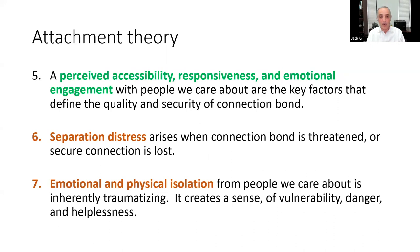When a person has perceived accessibility, responsiveness, and emotional engagement with people they care about — and 'perceived' is an important word — our senses get heightened when we love others. The adage that the people who love you the most hurt you the most is correct here. When we love someone, we get fine-tuned to their physical expressions, body language, tone of voice, loudness of voice, gestures, facial expression, eye expression. We constantly monitor all of this for one thing: are you there? It's like a ping constantly going out — are you there for me? And the perceived accessibility, responsiveness, and emotional engagement means you get pinged back saying yes, I'm here, I'm accessible, I'm responsive, I'm engaged. This is the key factor in the quality and security of the connection bond.